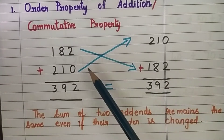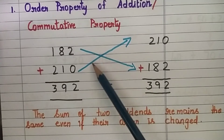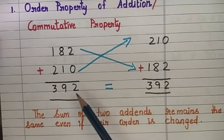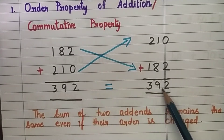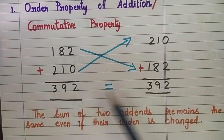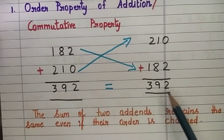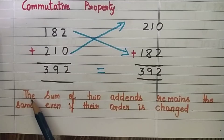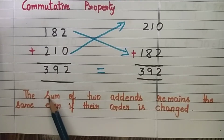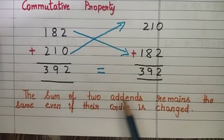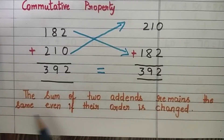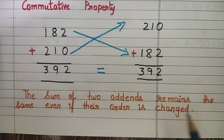When you change the order, the sum does not change — it remains the same. We conclude: the sum of two addends remains the same even if their order is changed.